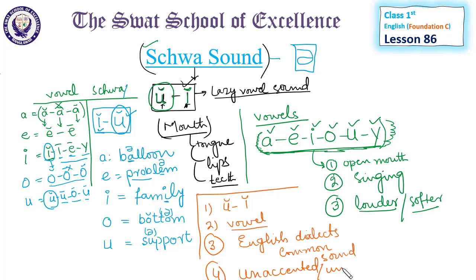Fourth point: the schwa sound appears in unaccented or unstressed syllables. For example, the word 'top' has three sounds - 't', 'o', 'p'. But when unstressed, the vowel becomes schwa.